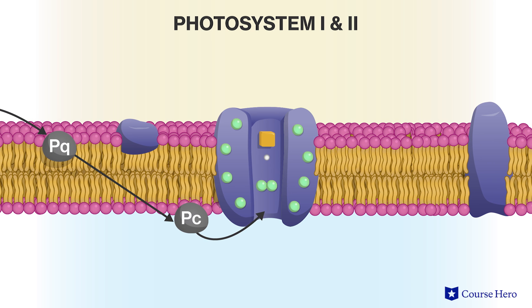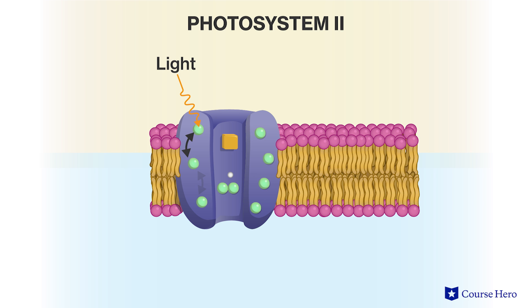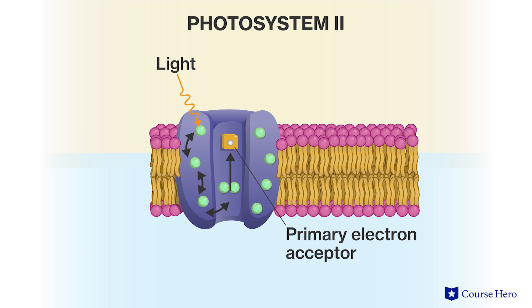Thus, the series of pigment molecules in the light-harvesting complex creates a pathway to the reaction center complex. The pair of chlorophyll molecules found in the reaction center complex of photosystem 2 are known as P680, because these molecules are best at absorbing light at a wavelength of 680 nanometers. When the energy being relayed in the harvesting complex reaches the P680 pair of chlorophyll molecules, it excites an electron to a higher energy state. This electron is transferred to the primary electron acceptor, resulting in a positively charged P680, denoted as P680+.